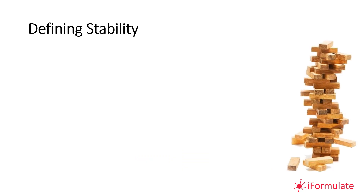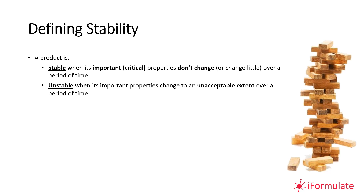Let's drill down and define stability more precisely. We say a product is stable when its important or critical properties don't change, or change very little, over a period of time. Conversely, it's unstable when its important properties change to an unacceptable extent over a period of time. So it's about which properties are important or critical, and what is an acceptable extent of change.